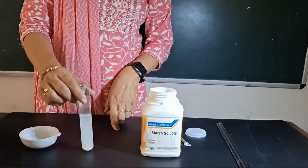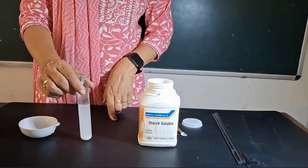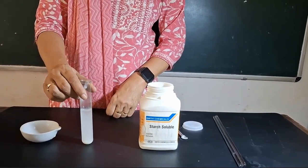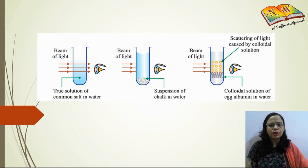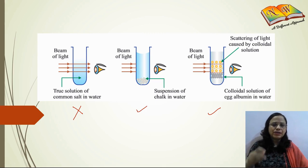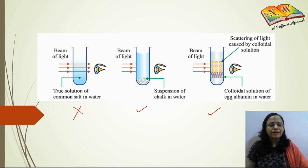Also, if you leave this solution on the table for a while, you will not find anything settling down, showing that the solution is quite stable. It is observed that when a beam of light passes through a true solution, scattering will not take place because the particle size is extremely small. But in case of a suspension and a colloidal solution, we will be able to see the path of light passing through the solution because the Tyndall effect will happen — scattering of light will take place due to the bigger particle size in both suspension and colloidal solution.